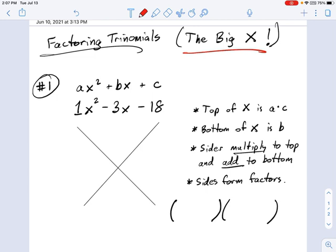And what I have here is a trinomial. That's this guy. It's a trinomial because it has three terms. A trinomial, which is 1x squared minus 3x minus 18. And I want to turn that into two parentheses times each other.